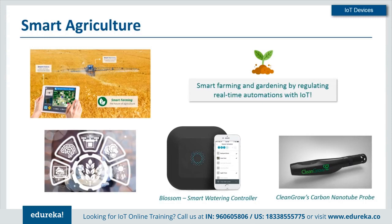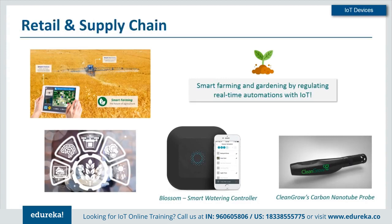Another major area of application for IoT devices is agriculture — a sector often neglected despite its utmost importance — which can now be brought up to speed with IoT. Several cheap and minimal sensors can monitor the best climate and soil quality for the right crops, while other smart devices ensure the efficiency of automated irrigation systems. The innovative smart watering system Blossom creates optimal watering schedules for all plants in your home based on real-time weather data and regulates all your sprinklers accordingly. The Clean Gross carbon nanotube probe monitors the intake of nutrients in crops to better manage farming resources, allowing farmers to alter the maturity rate and color of crops for better yields.